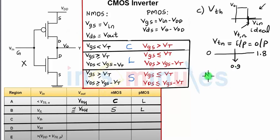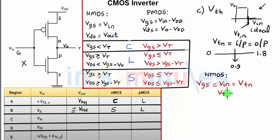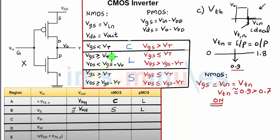Let's identify the region of operation of the NMOS and PMOS transistors when the input is at the switching threshold — starting with NMOS. For the NMOS transistor, VGS equals Vin, which equals the switching threshold. The switching threshold is approximately 0.9V, which is greater than the threshold voltage of 0.7V, so the transistor is on. Now we need to identify whether it is operating in the linear or saturation region.